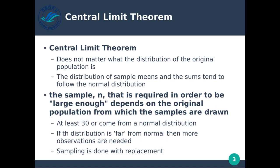The sample size n required to be large enough depends on the original population from which the samples are drawn. If we have a large population, we want to collect as much data as possible to represent the features of our population accurately. A hard and fast rule: we need at least 30 samples, or the samples need to come from a normal distribution.